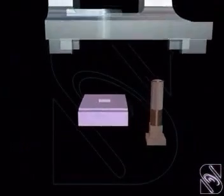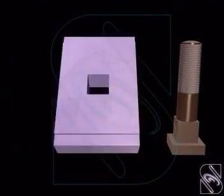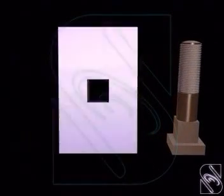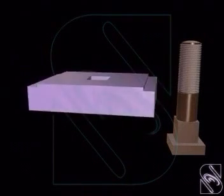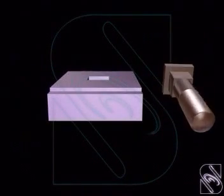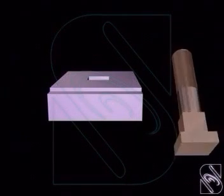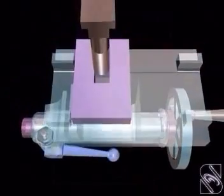The clamping plate that is used to clamp the tailstock with the lathe bed at the desired location is assembled with the body using bolt and nut.